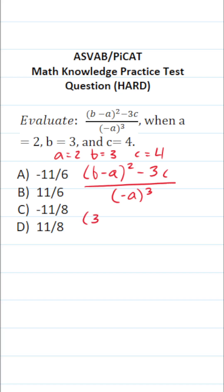This becomes 3 minus 2 squared minus 3 times C is 4 all over negative A to the third power. So let's start with the denominator here.